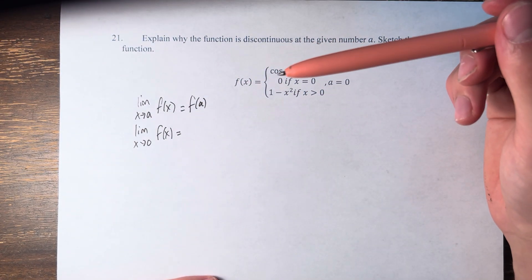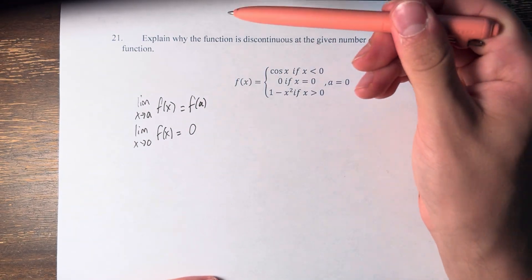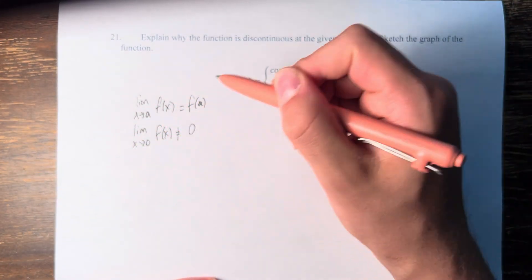f(0) is the value of the function at 0, which we're told is 0. So to show that it's discontinuous, we need to show that the limit is not equal to 0.